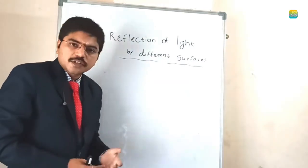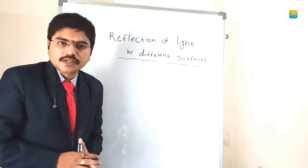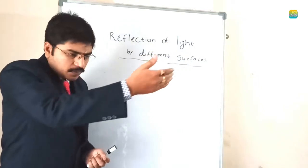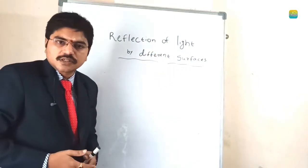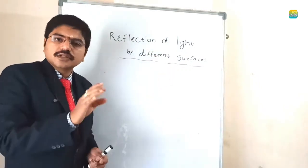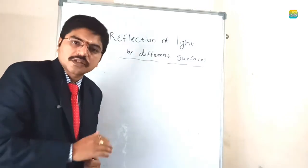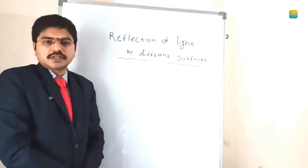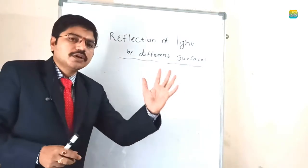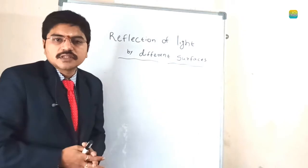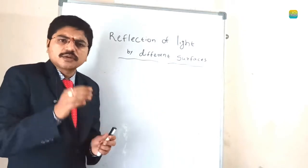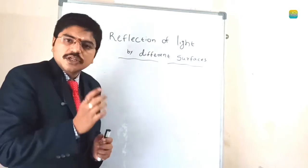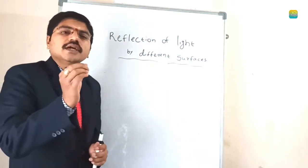Different types of surfaces exist. Mostly we have plane surfaces and curved surfaces. For curved surfaces, two types are there: one is a concave surface and another one is a convex surface. Concave is convergent and convex is divergent.